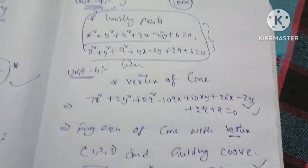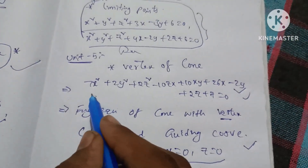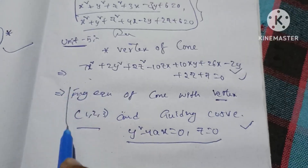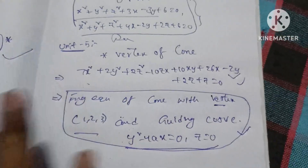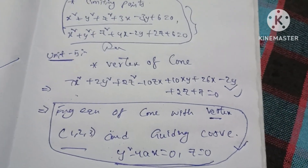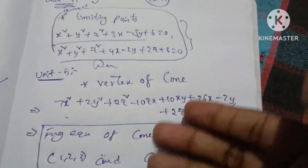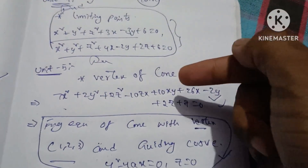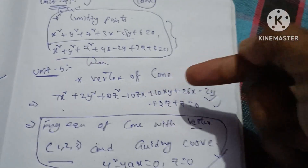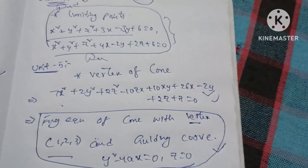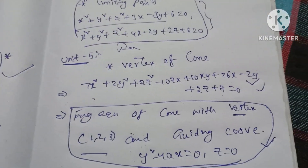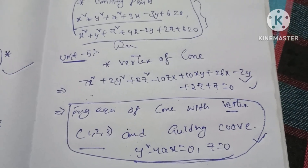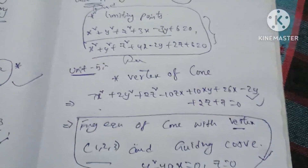Limiting points in Unit 4 — tell me about this question. Vertex of the cone in Unit 5 — tell me about this question. If I tell you about the models, I will tell you about each model. Each 10-mark unit question will be explained.